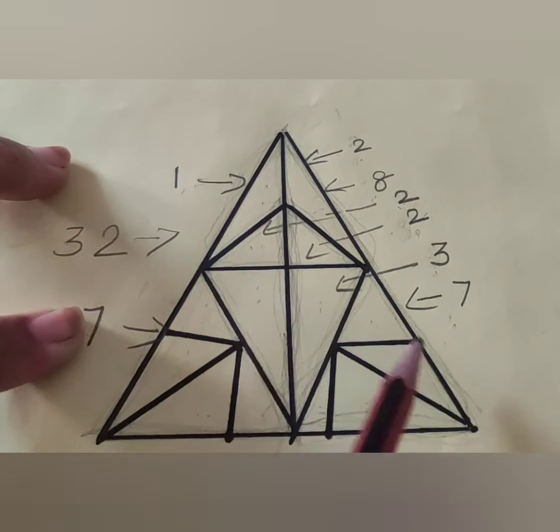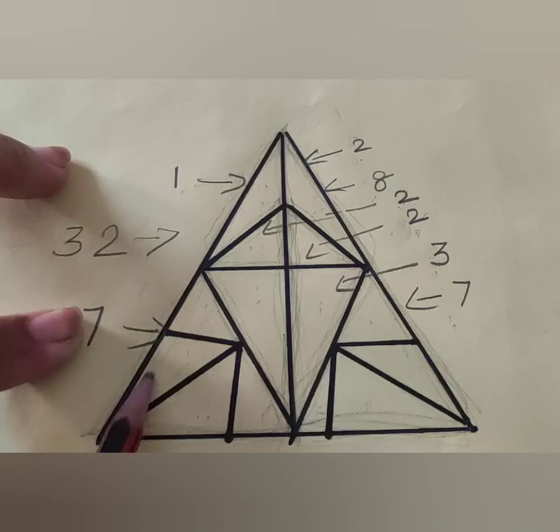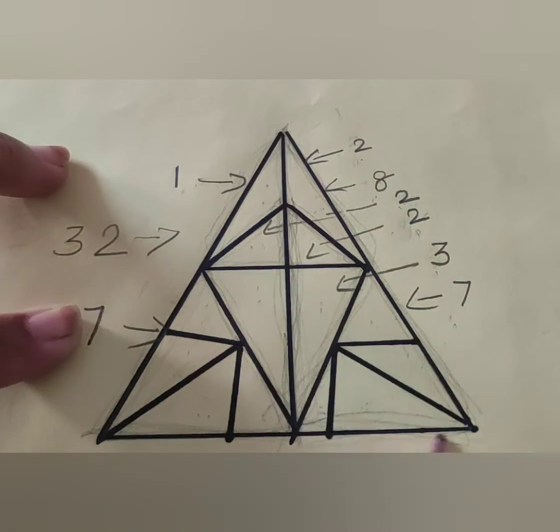The big triangle is divided into 2 triangles. That is, 1 and 2.